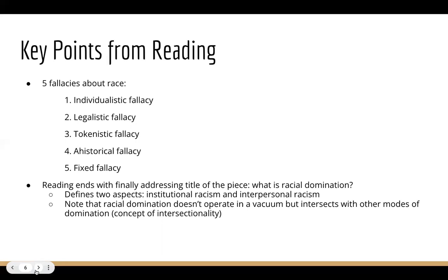Number four is the ahistorical fallacy — for those who want to deny history. If you've heard someone say 'slavery was hundreds of years ago,' that ignores the fact that after slavery, in most of the South as well as other parts of the country, we had the Jim Crow era, where there was de jure discrimination and racism was legally accepted and even encouraged — lasting well into the sixties and even seventies in some parts. The ahistorical fallacy also ignores the ways in which history shapes present situations.